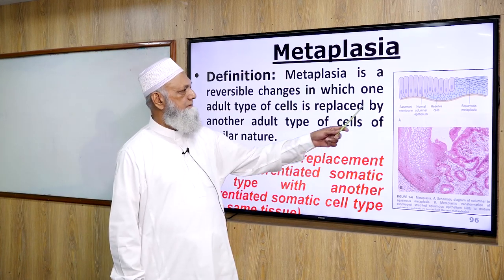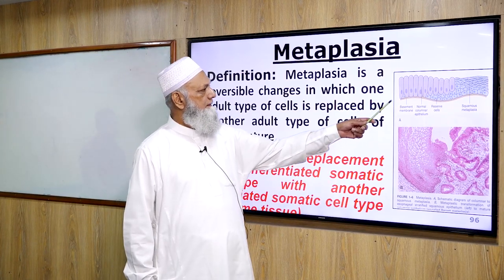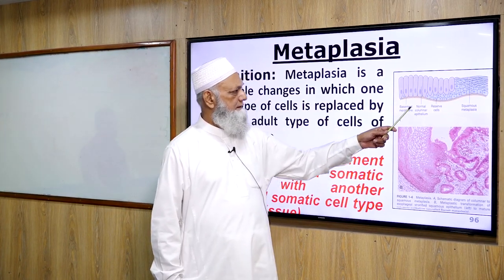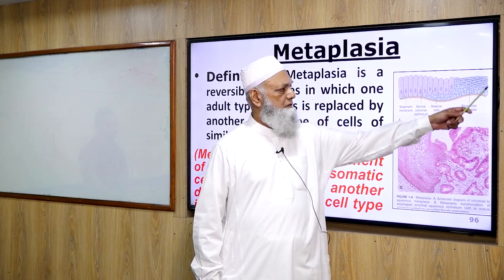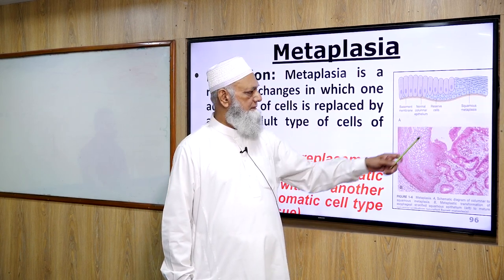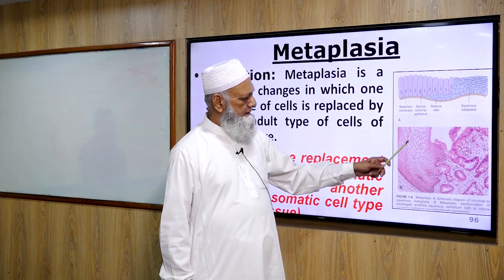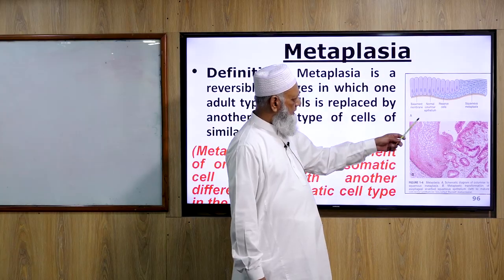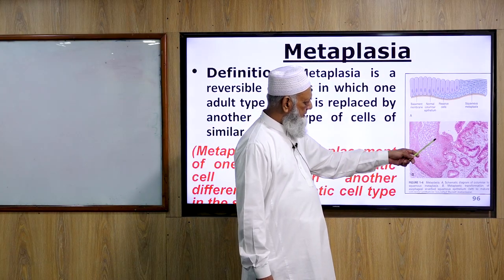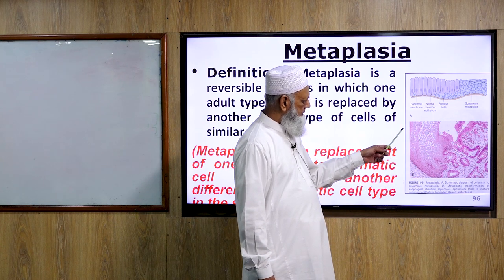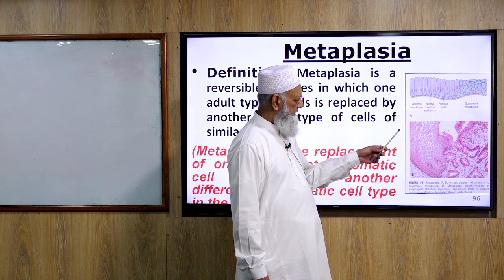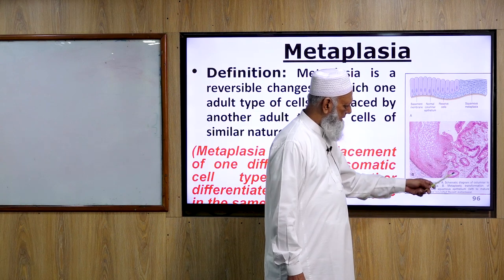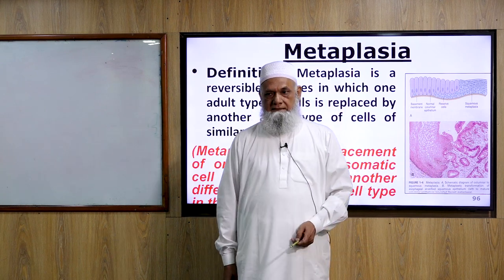This picture shows the columnar cell replaced by squamous cell. This is a picture of the lower end of the esophagus, lined by squamous epithelium, which is replaced by columnar epithelium of gastric type.